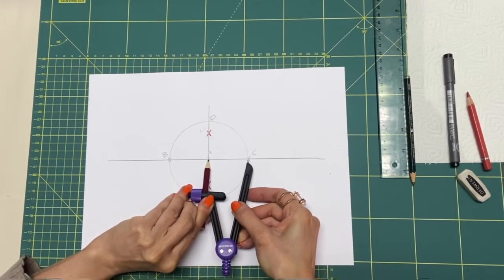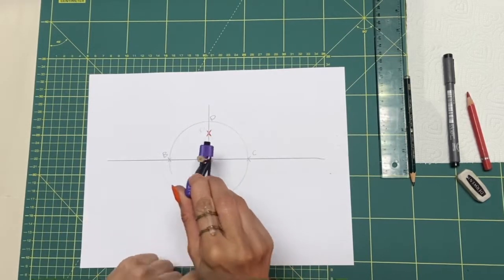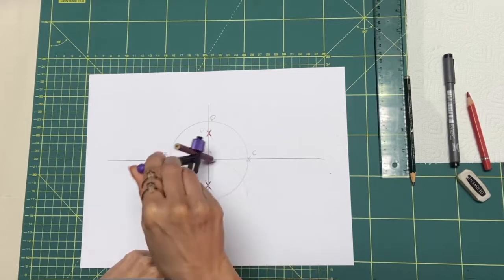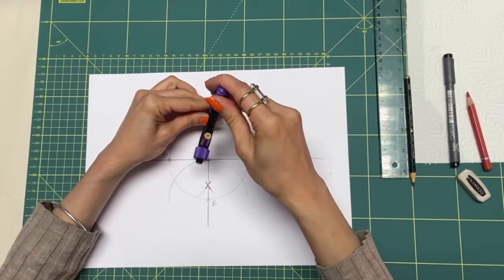Open the compass the same width as the circle. Draw two half circles, one with center E and the other one with center D.